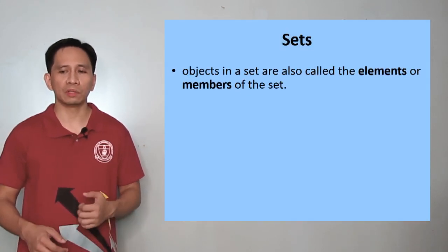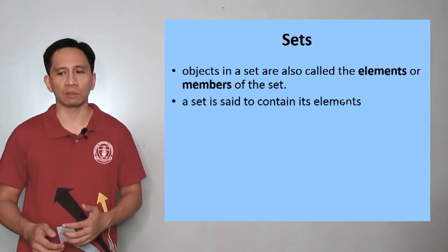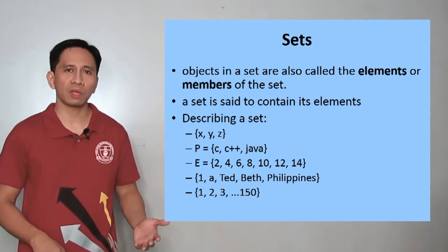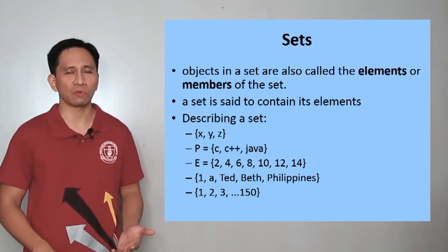Objects in a set are also called elements or members of the set. A set is said to contain its elements. These are different methods of describing contents of a set.